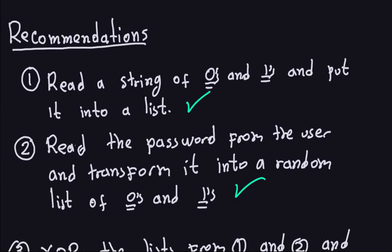Hello and welcome again. This is the third part of the series of videos for implementing the stream cipher in Java. In videos one and two we already covered the first two parts. Part one was to read the string of zeros and ones and put it into a list, and part two was to read the password from the user and transform it into a random list of zeros and ones.